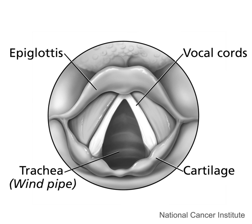Bilabial stops are also unusual in that an articulator in the upper section of the vocal tract actively moves downwards, as the upper lip shows some active downward movement. Labiodental consonants are made by the lower lip rising to the upper teeth. Labiodental consonants are most often fricatives while labiodental nasals are also typologically common. There is debate as to whether true labiodental plosives occur in any natural language, though a number of languages are reported to have labiodental plosives including Zulu, Tonga, and Shubi. Labiodental affricates are reported in Songa, which would require the stop portion of the affricate to be a labiodental stop. Unlike plosives and affricates, labiodental nasals are common across languages.